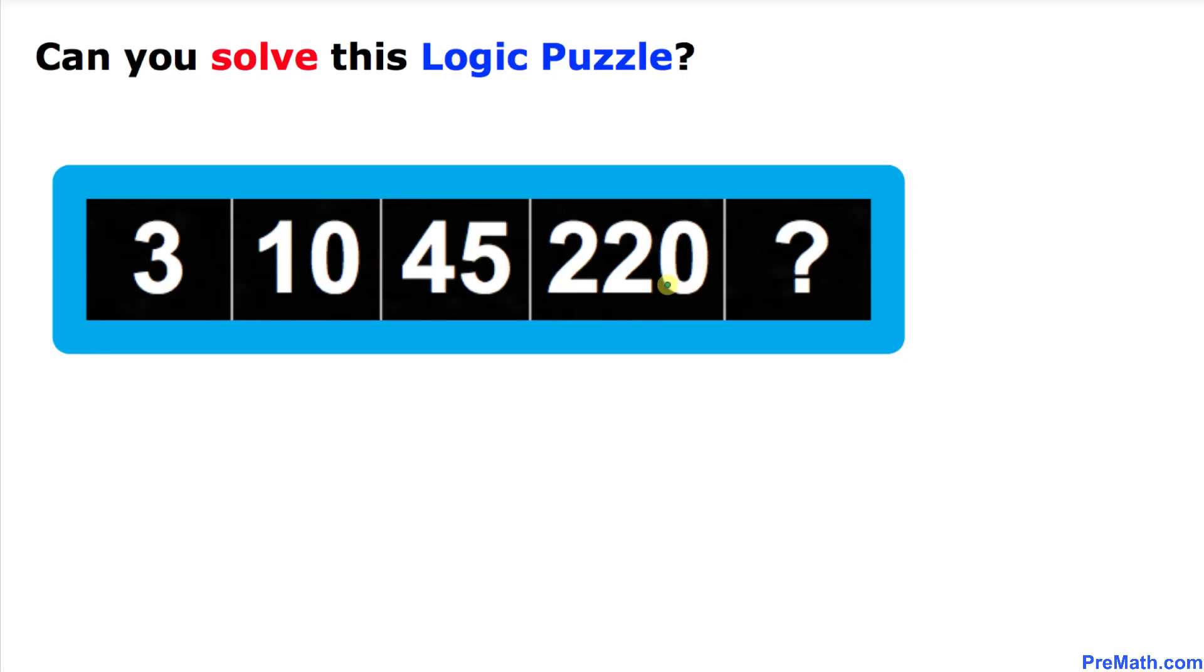Welcome to Pre-Math. In this video tutorial, we have got this logic puzzle. Here's our puzzle: the first number is 3, then we have 10, then 45, 220. Now the question mark is what number is going to be at this place. Can you figure out the answer to this puzzle on your own? You may pause the video and take your time.